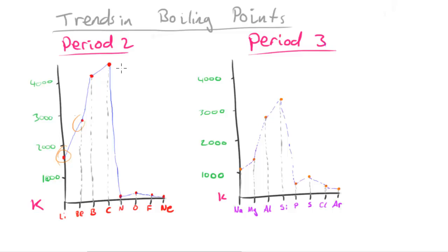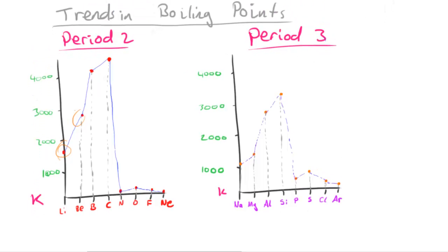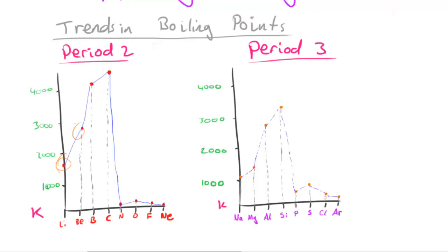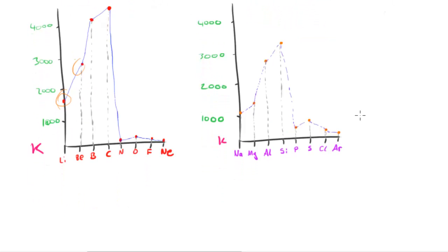Just looking at the graphs, it probably isn't immediately obvious why the trend looks like this. It goes from lithium, jumps up to beryllium, jumps up to boron, jumps up to carbon, and then goes down. It might not be immediately obvious why this happens, but if we think about the forces acting between the different molecules or individual atoms, we can get a good idea of why this is happening.